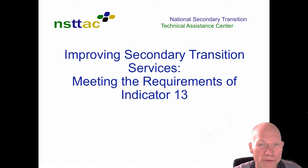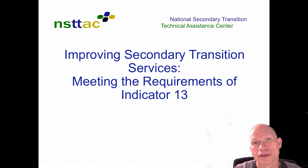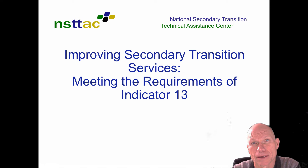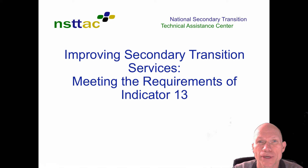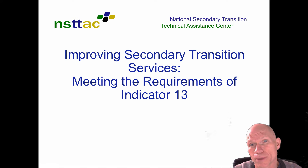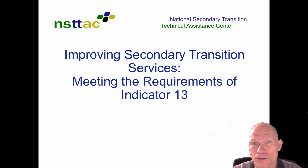As a special education professional, you're required to help develop a transition plan for any child who reaches at least the age of 16 and has a disability. We're going to look at what the elements of a transition plan are as required by Indicator 13, which means if someone were to check a child's transition plan, they're going to look for eight specific pieces.